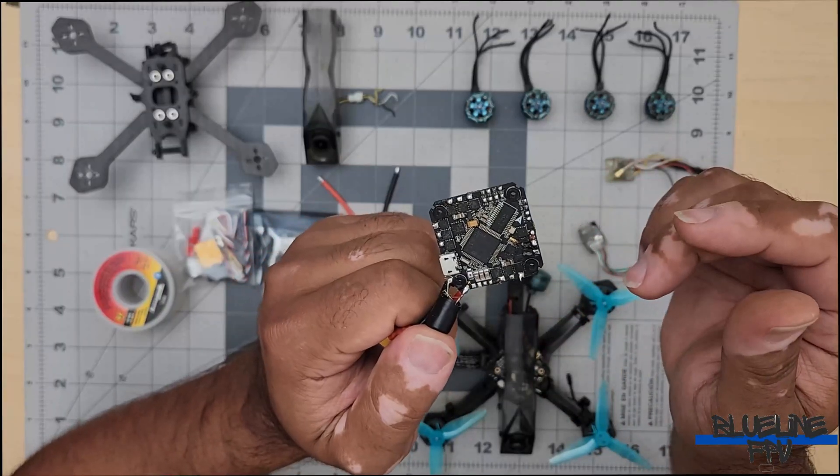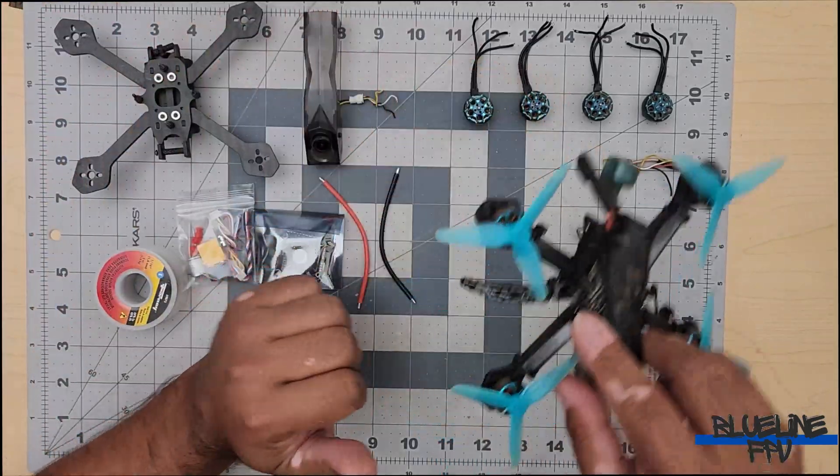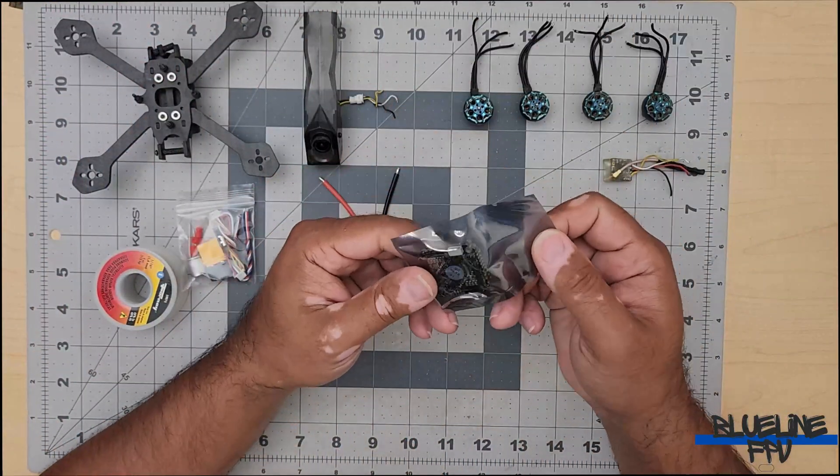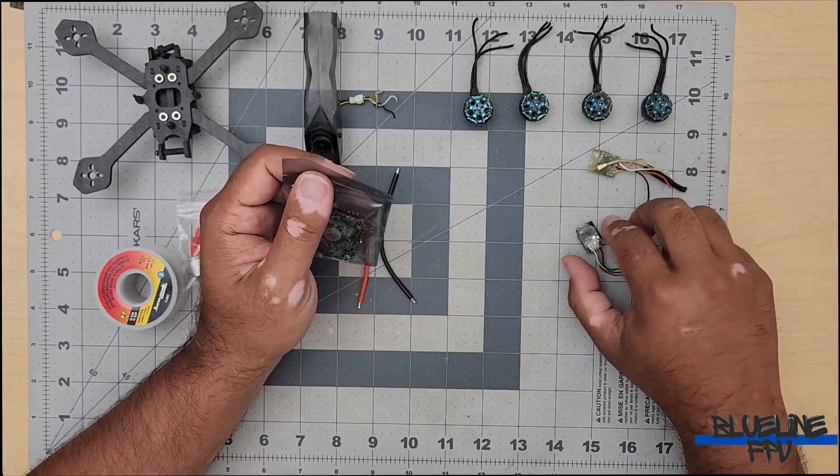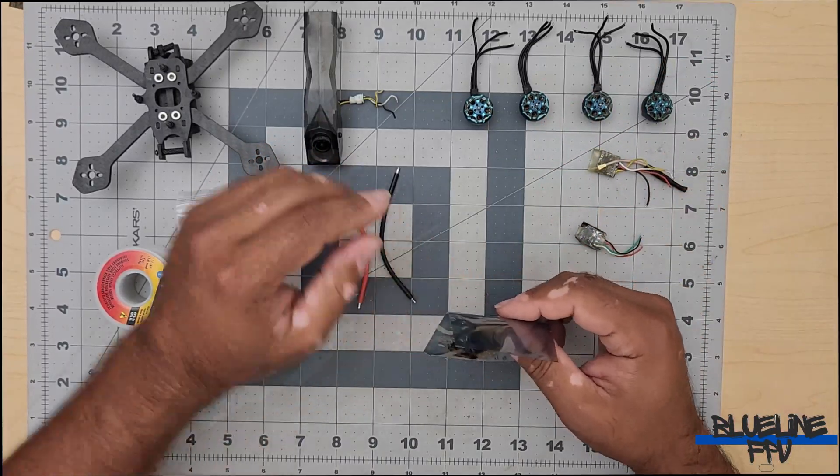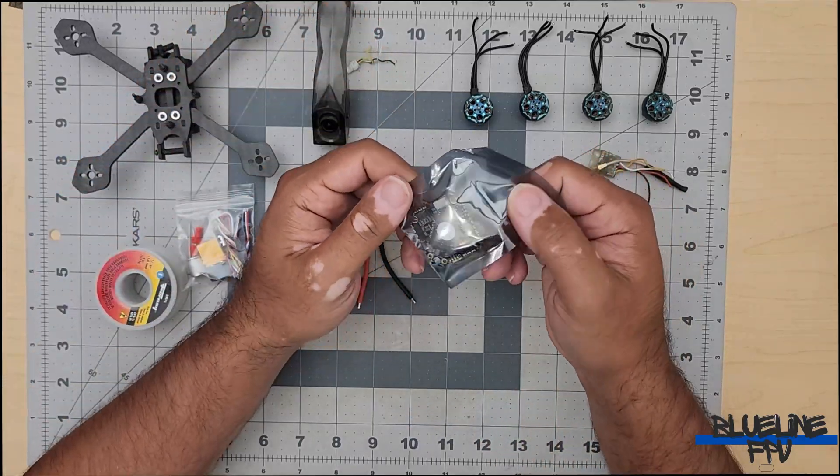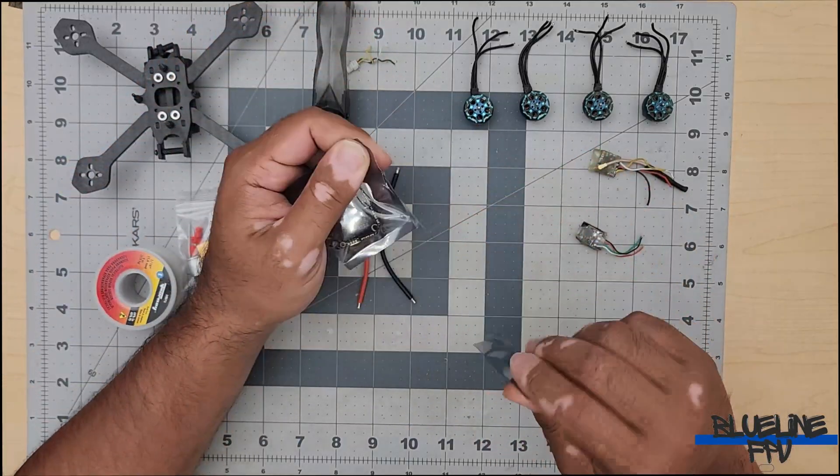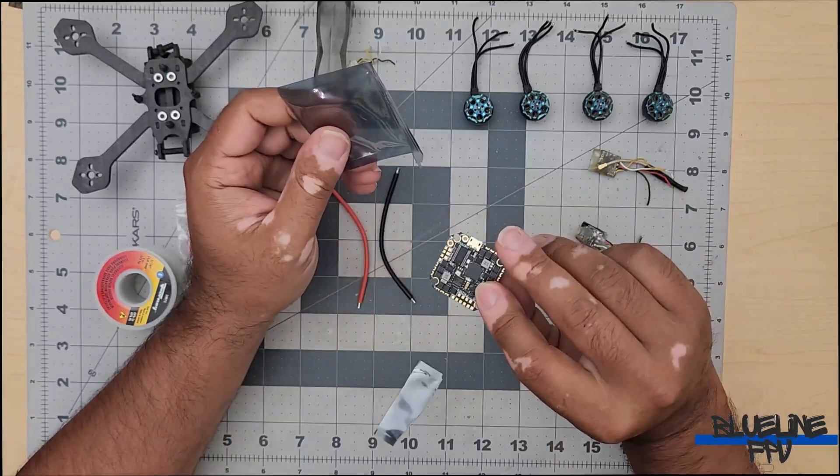So what we're going to do is we're going to rebuild this one. And as you can see we got all of our parts ready to go, the motors, the video transmitter system, the receiver system. I still got the camera in the canopy. And here we have our flight controller, brand new in the package. So yeah, let's build a drone.